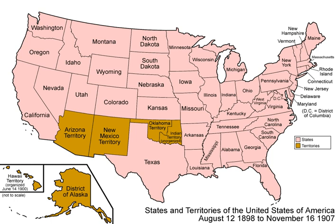Lincoln set up the Freedmen's Bureau in March 1865 to aid former slaves in finding education, health care, and employment. The final abolition of slavery was achieved by the Thirteenth Amendment, ratified in December 1865.